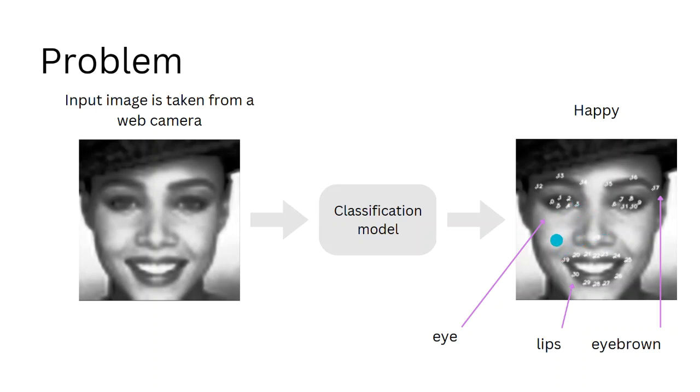These landmarks are very crucial for emotional cognition, because in this particular problem we want to use Euclidean distances.